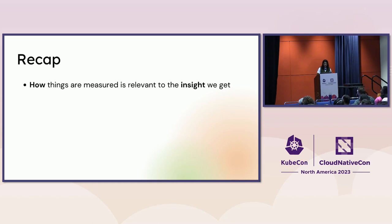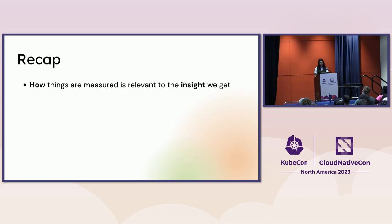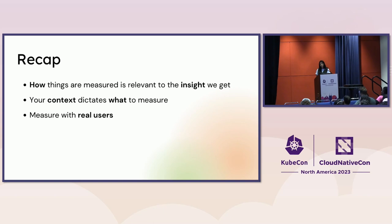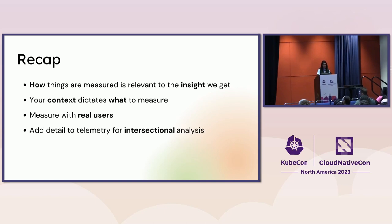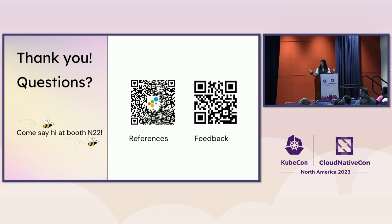To recap: how things are measured is really important to the insight you get. LCP values might not be interesting if they're measuring a cookie banner rather than the main content of your website, so it's important to understand what is actually being measured. Your context is the most important thing when deciding what to measure. Measuring with real users is important so we can do intersectional analysis and figure out what issues are occurring for which segments of your users. And adding detail to telemetry is super, super important. That's all I got — thank you so much.